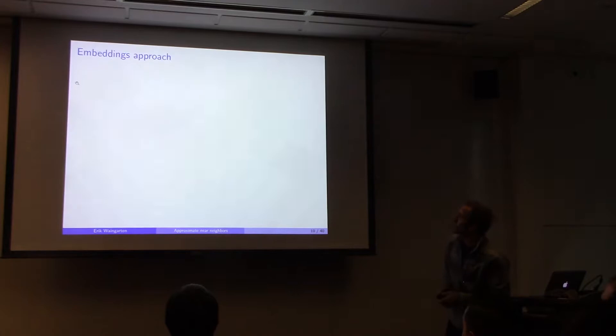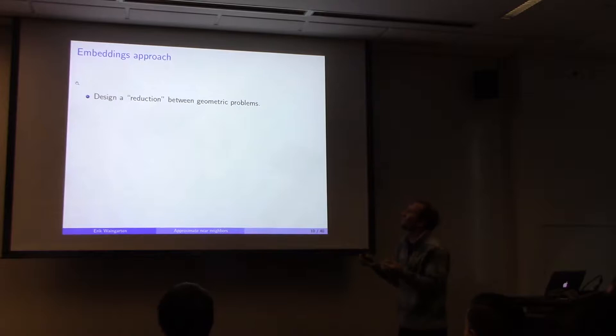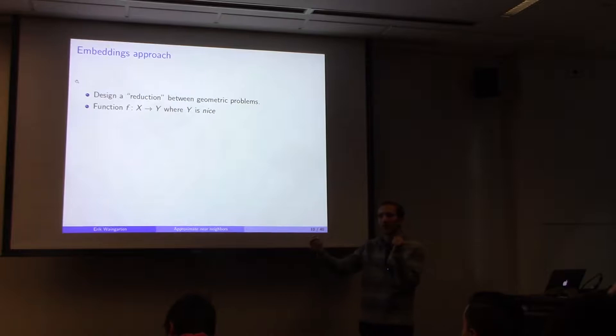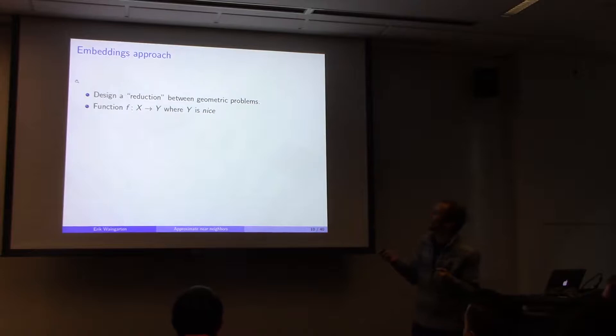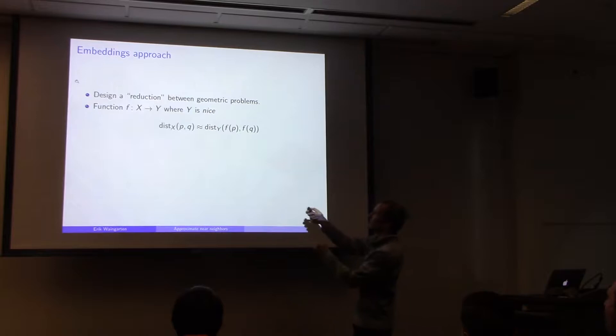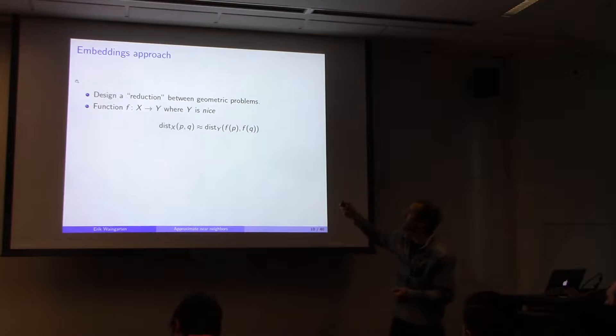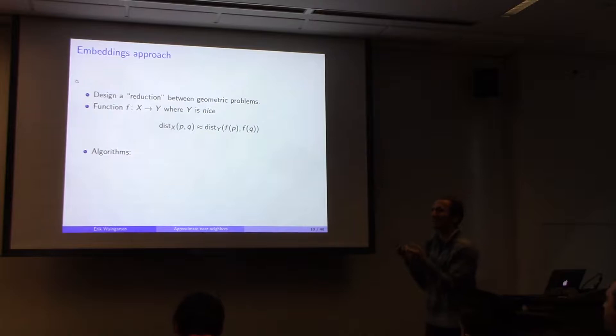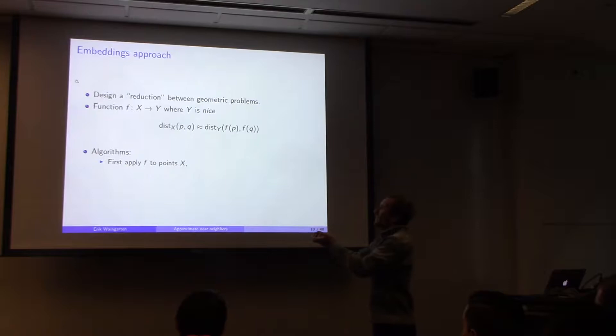A natural first approach is the embeddings approach: design a reduction between geometric problems via a function f mapping space X into a 'nice' space Y like L1 or L2. If distances in X are approximately preserved as distances in Y, then algorithms for Y can be applied to X. During preprocessing, apply f to all points; then solve the problem in Y using known data structures.